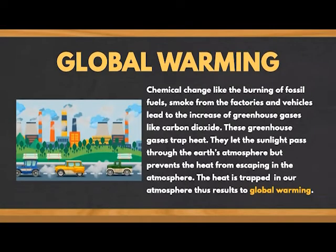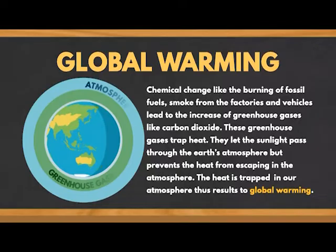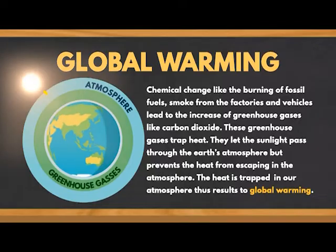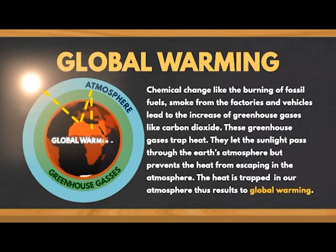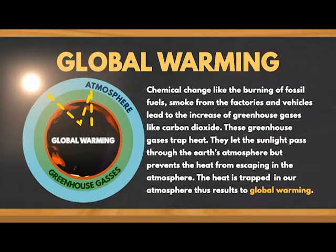Moreover, chemical change like the burning of fossil fuels and smoke from factories and vehicles leads to the increase of greenhouse gases like carbon dioxide, methane, and water vapor. These greenhouse gases trap heat — they let sunlight pass through the Earth's atmosphere but prevent the heat from escaping. The heat is trapped in our atmosphere, resulting in global warming.